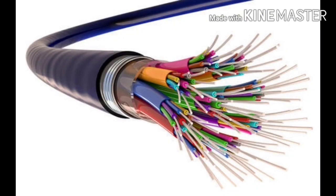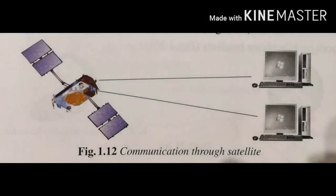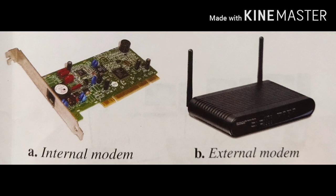The third one is communication channels. These are the most important component of a network, as the channel is required to share information between various workstations and devices connected in a network. A channel could be a wire or different kinds of waves present in the air like radio waves, microwaves, etc.